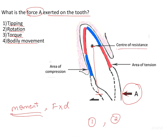The center of resistance of a tooth is a point where, if the force is applied through it, it will bring about bodily movement. But here the force is not passing through the center of resistance — it is passing away from it. So the tooth is going to experience a rotational tendency. The crown is going to rotate lingually and the root is going to rotate buccally, bringing about a tipping kind of movement.